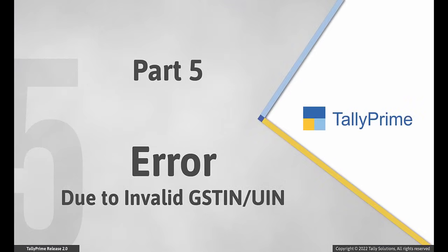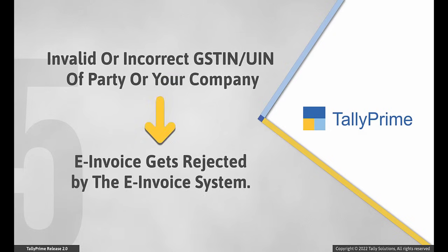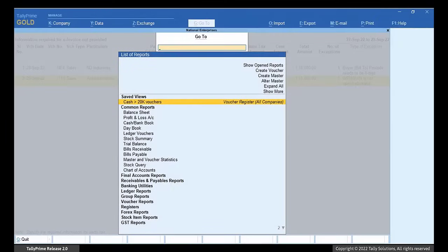Now, it may also happen that the GSTIN of the party or your company is invalid. When you try to generate an e-invoice for a voucher in which either the party's or your company's GSTIN UIN is invalid, it will get rejected by the e-invoice system. In such a case, you need to ensure that the GSTIN UINs in the transaction are correct. Press Alt-G, Alter Master, Ledger — type or select the name of the ledger and press Enter.